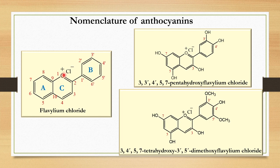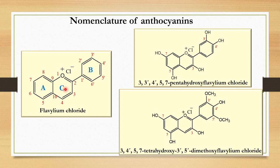We start the numbering from the oxygen atom. You must be thinking why we are naming them as the A ring, B ring, and C ring. When we discuss the biosynthesis, we will see that the A ring and B ring come from different pathways, and the C ring is formed when these two rings are joined together. So the C ring is formed later, while A and B rings are already present during biosynthesis. This is the structure of flavylium chloride.